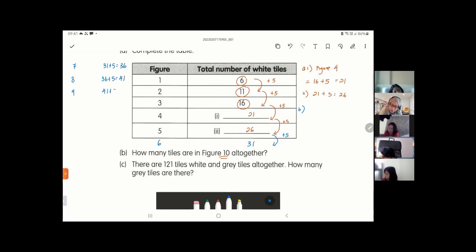Figure 8: 36 plus 5 is 41. Figure 9: 41 plus 5 is 46. Figure 10: 46 plus 5 will give me 51. But this is only the white tiles. Don't forget, I want to know the total number of tiles altogether. Altogether means I have gray plus white. Remember the gray is according to the figure number, so it is 10 plus 51 equals to 61. That's my answer for number B.